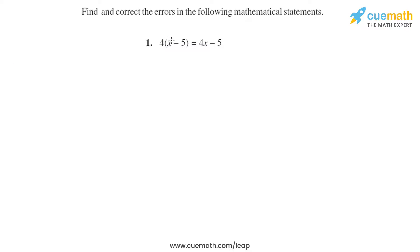For 4 times (x minus 5), whenever we have any term outside the bracket, we have to multiply that term with all the terms inside the bracket. That is 4 multiplied with x equals 4x, and 4 multiplied with minus 5 equals minus 20. So the correct answer should be 4x minus 20, not 4x minus 5.